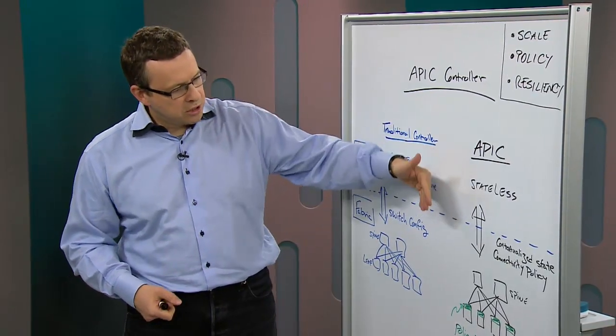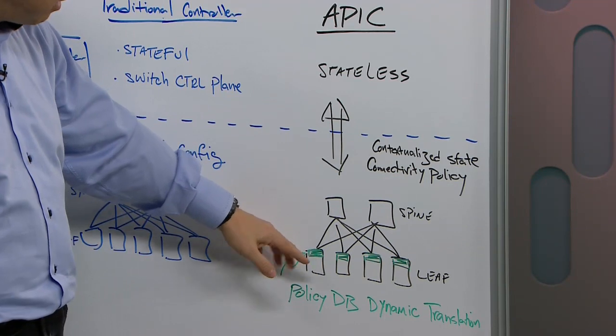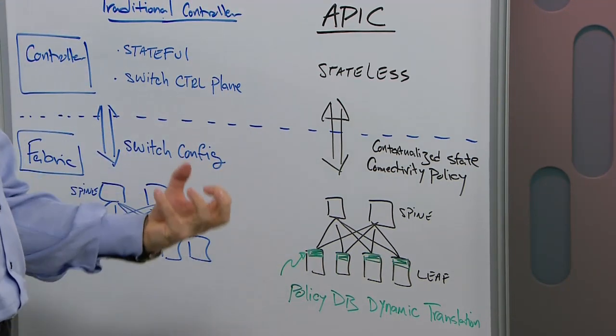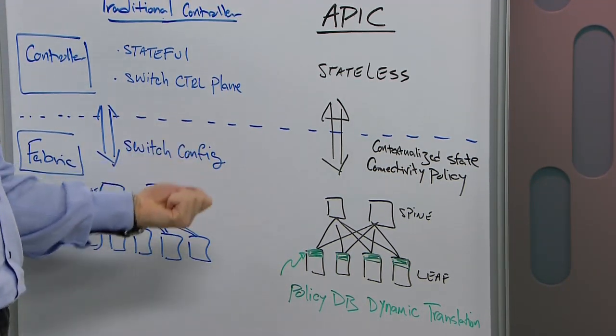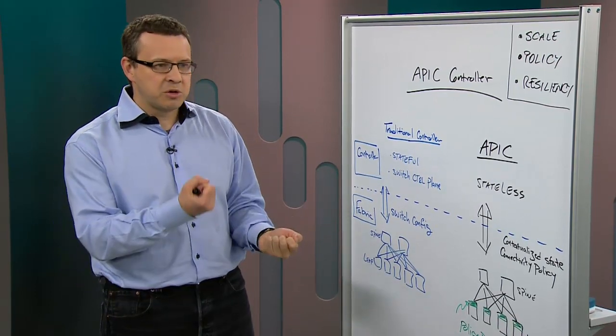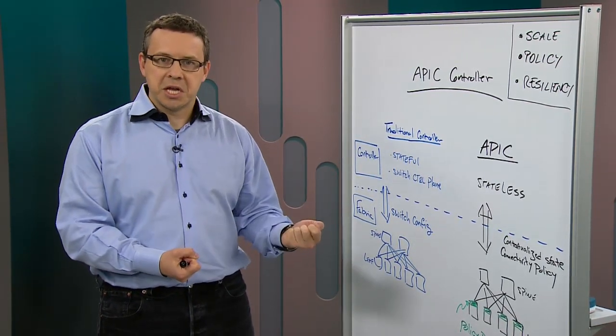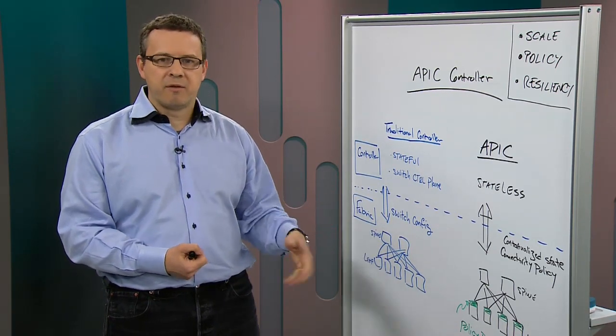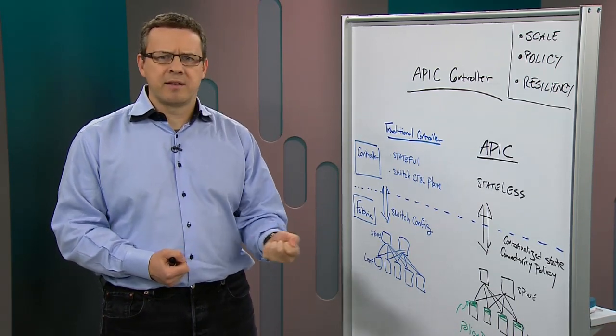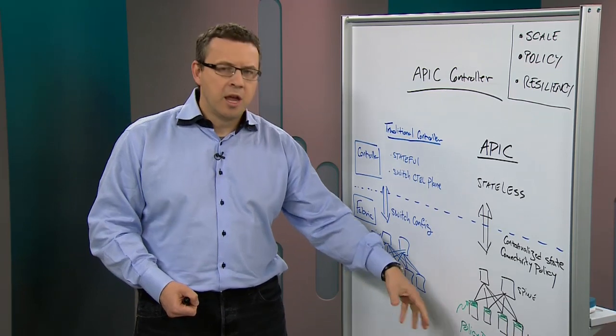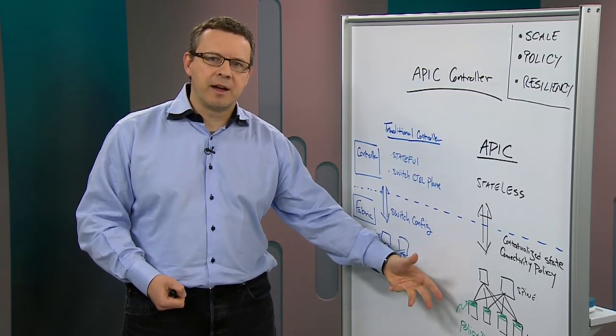You push the policy down. It sits here. You have a policy database literally in every one of the switches. Whenever you need a new attachment to the switch, let's say a server comes and connects, you see that. You take your policy, translate that, and configure, let's say, an ACL route entry on the switch. You do this dynamically on the fly.